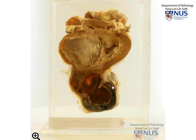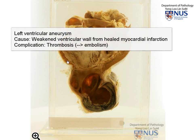So within this single specimen, we are able to see the main pathology, which is the left ventricular aneurysm; the probable cause, which is previous healed myocardial infarction with weakening of the ventricular wall; and one of the complications due to turbulent blood flow, which is thrombosis.